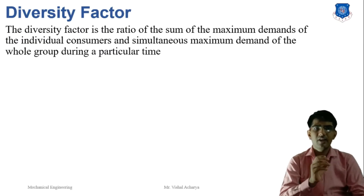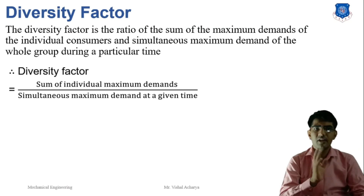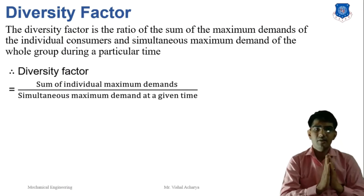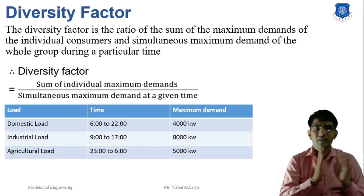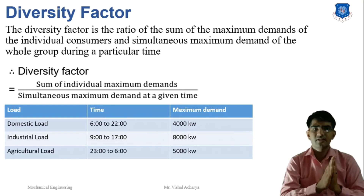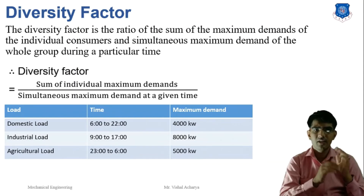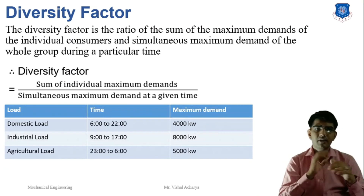The next term is the diversity factor. Diversity factor is the ratio of the sum of the individual maximum demands of consumers to the simultaneous maximum demand of the whole group during a particular time period. Diversity factor = sum of individual maximum demands / simultaneous maximum demand at a given time. The diversity factor is always greater than 1.